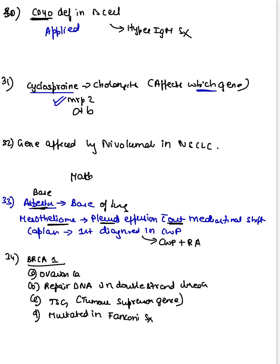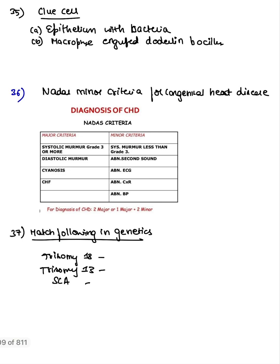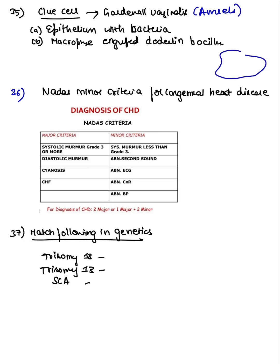BRCA1 and BRCA2 gene question — asked which statement is incorrect, a simple question. Then clue cells — seen in Gardnerella vaginalis infection, using Amsel's criteria. Clue cells are epithelial cells studded with bacteria.